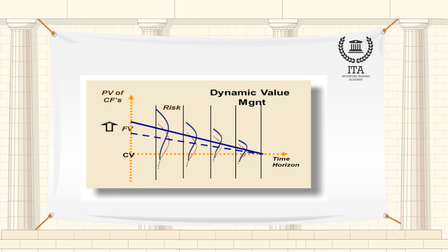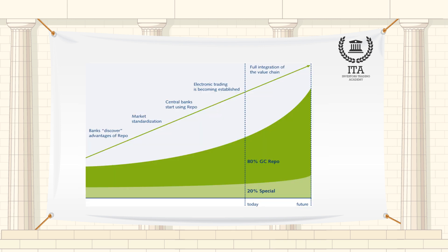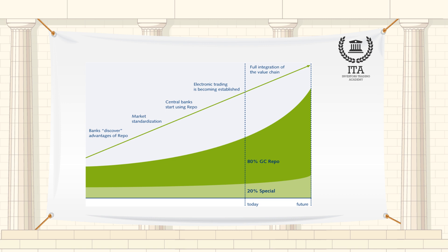Instead, a risk-adjusted value is calculated, which is less than the market value by an amount — by deducting a haircut from the market value of collateral, or multiplying the purchase price by an initial margin.